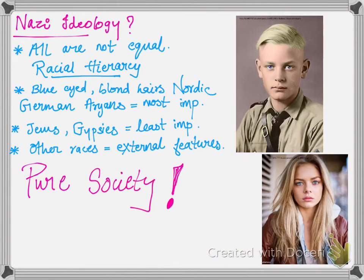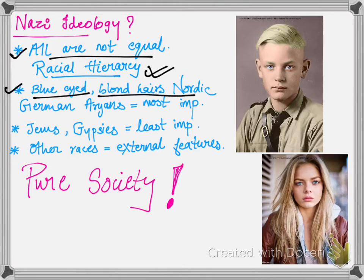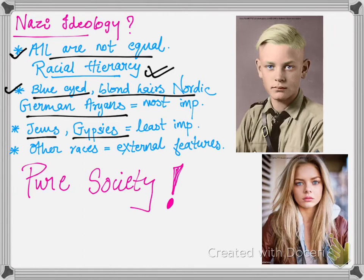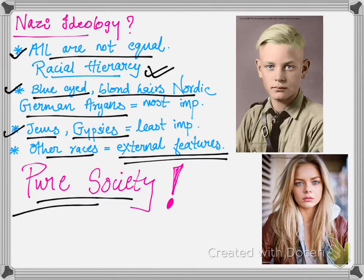According to Nazi ideology, all were not equal — they followed racial hierarchy, dividing people according to their importance. The blue-eyed Nordic German Aryans with blonde hair were considered the most important, while communities like Jews and gypsies were considered least important and treated as enemies. Other races were placed according to their external features. The Nazis wanted a pure society of Nordic German Aryans and wanted to eliminate the rest.